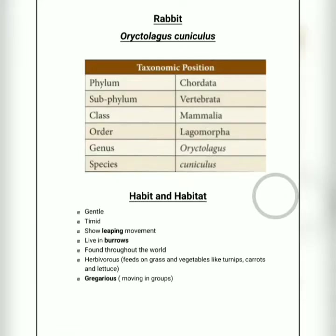Hello students, we are looking at the structural organization of animals, which is the 13th unit in the 10th standard science book. This unit consists of information about two organisms: the first one is about leech and the second one is about rabbit. We have already completed the leech part, and now we will move on with rabbit. In this video we will see about the external morphology of rabbit.